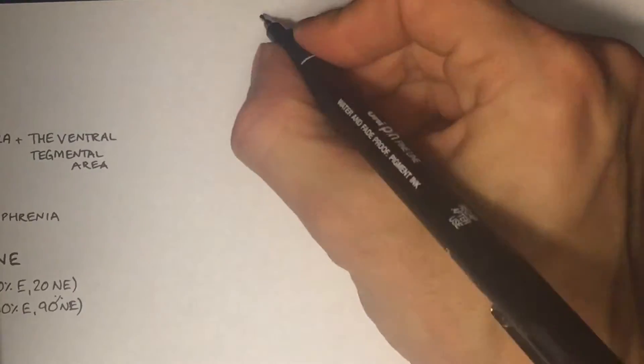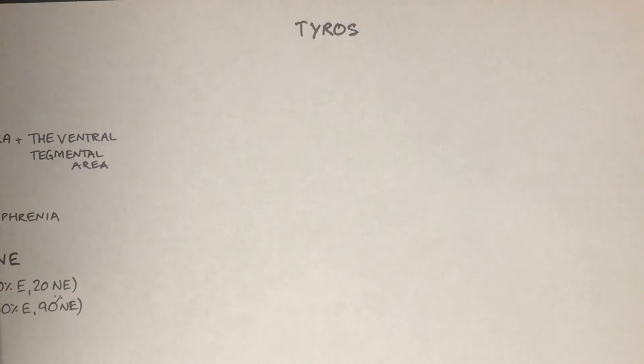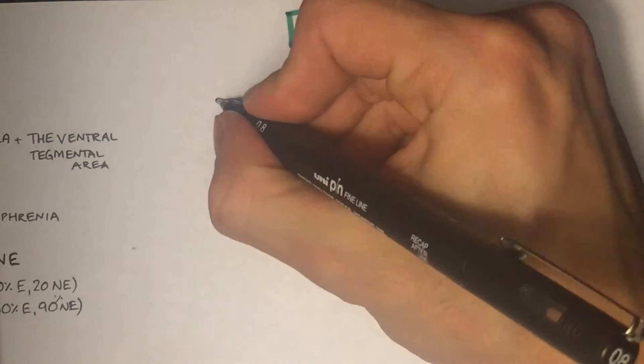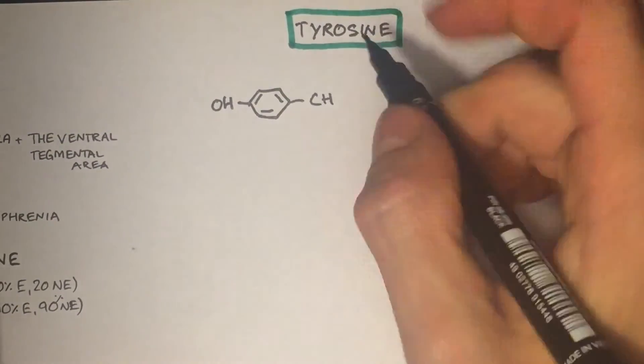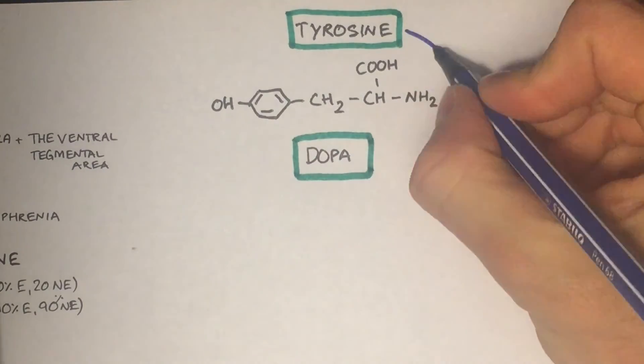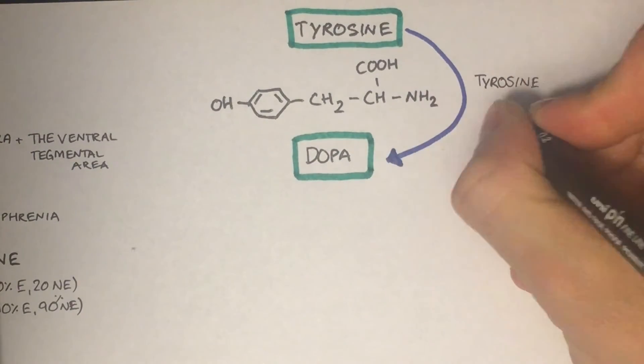The catecholamines derive from the amino acid tyrosine. Tyrosine is converted to dopa by the enzyme tyrosine hydroxylase which adds on a hydroxy group as indicated by the red box.